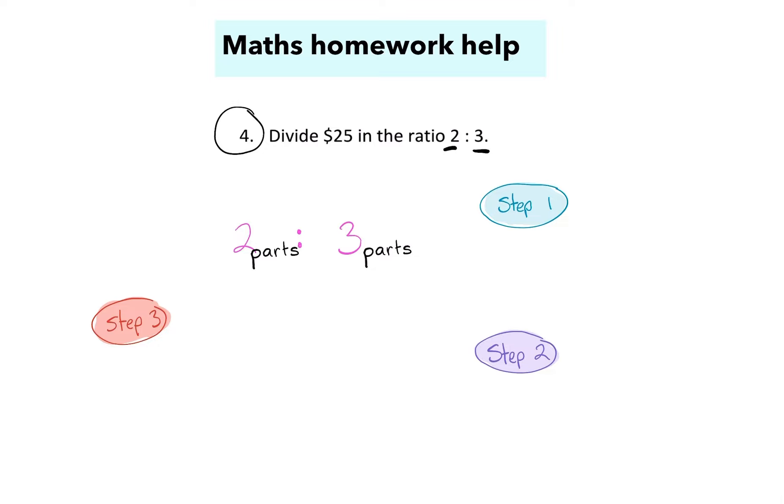Step number one is to determine how many total parts we should be dividing the number into. So I'm going to take the two and add it with the three, but I'm going to write this out in English so I can communicate my answer to the person who's reading it. So the total parts equals these two numbers added together,